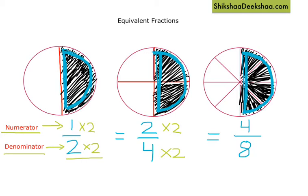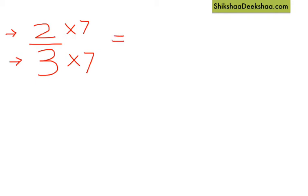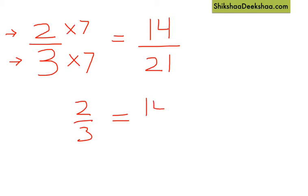Let's understand this with some more examples. Let's say we have the fraction 2 by 3 and we want to obtain an equivalent fraction. We need to multiply both numerator and denominator by the same number — it can be anything like 2, 3, 4, or any number. Let's choose 7. When we multiply both 2 and 3 by 7, we get 2 multiplied by 7 equals 14, and 3 multiplied by 7 equals 21. So we can say that 2 by 3 is equivalent to 14 by 21.